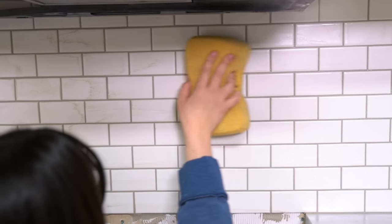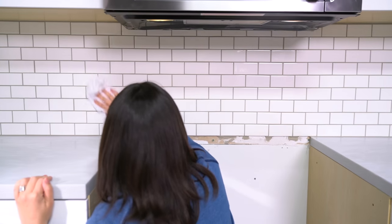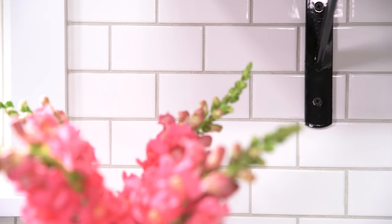When you've finished each section, use clean water and a sponge to wipe off the excess grout on the tile surface. Get off as much as you can, and then when it's dry, you can wipe off whatever is left using a clean cloth.